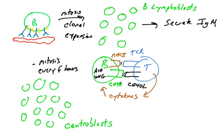These cells undergo mitosis every six hours and they are going to make a population of cells called centroblasts. This is the reason why your lymph nodes swell when you have an infection and they're tender. They are filled with millions of B cells.